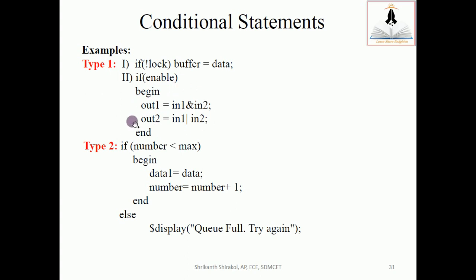Considering enable is equal to 1, out1 and out2 will be assigned with the expressions on the right side. For Type 2, the if-else statement: we have a condition — number less than maximum. There are two identifiers: number and maximum.